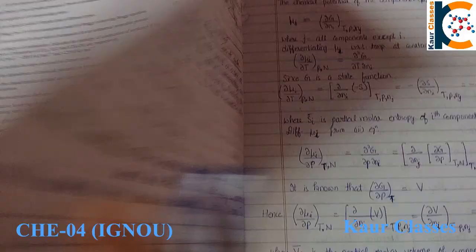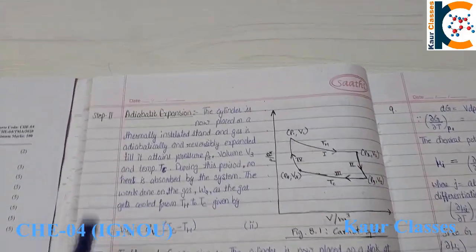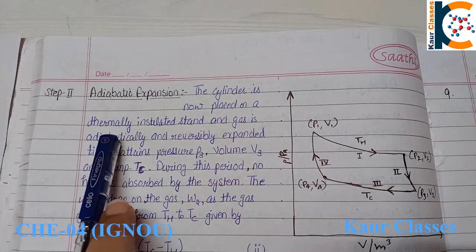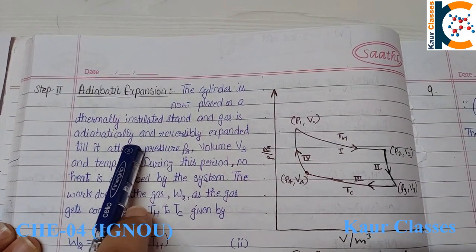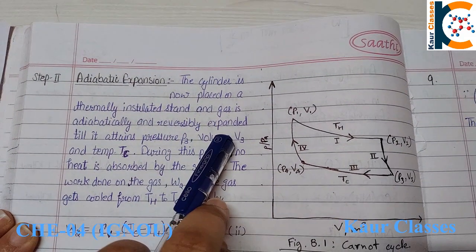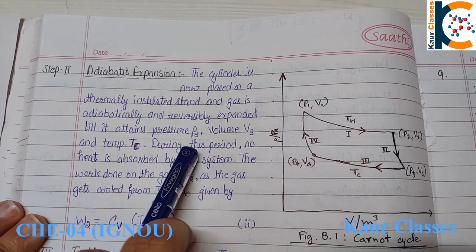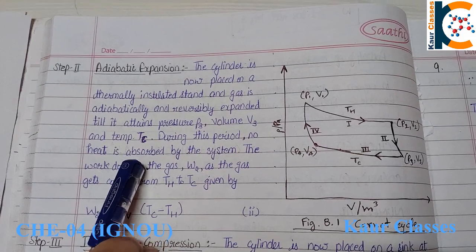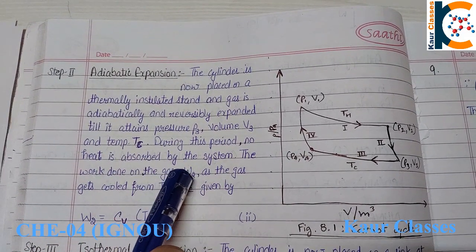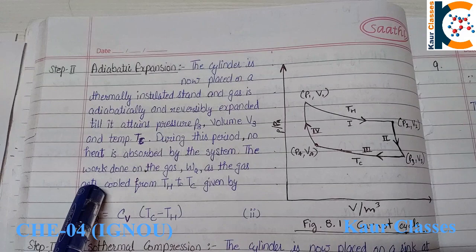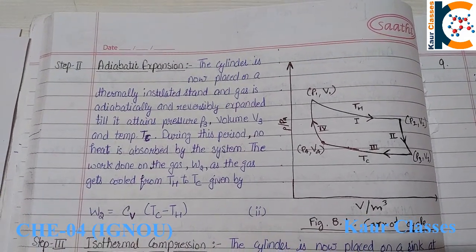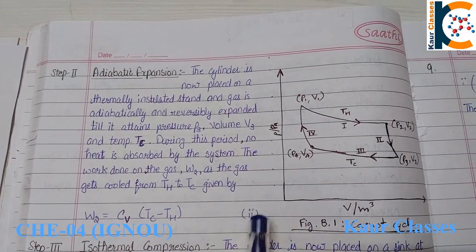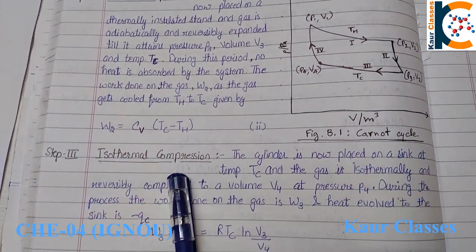Step two — adiabatic expansion: the cylinder is placed on a thermally insulated stand and the gas is adiabatically and reversibly expanded until pressure reaches P3 and volume V3 at temperature T_C. No heat is absorbed by the system. The work done W2 = C_v(T_C − T_H). This is equation number two.